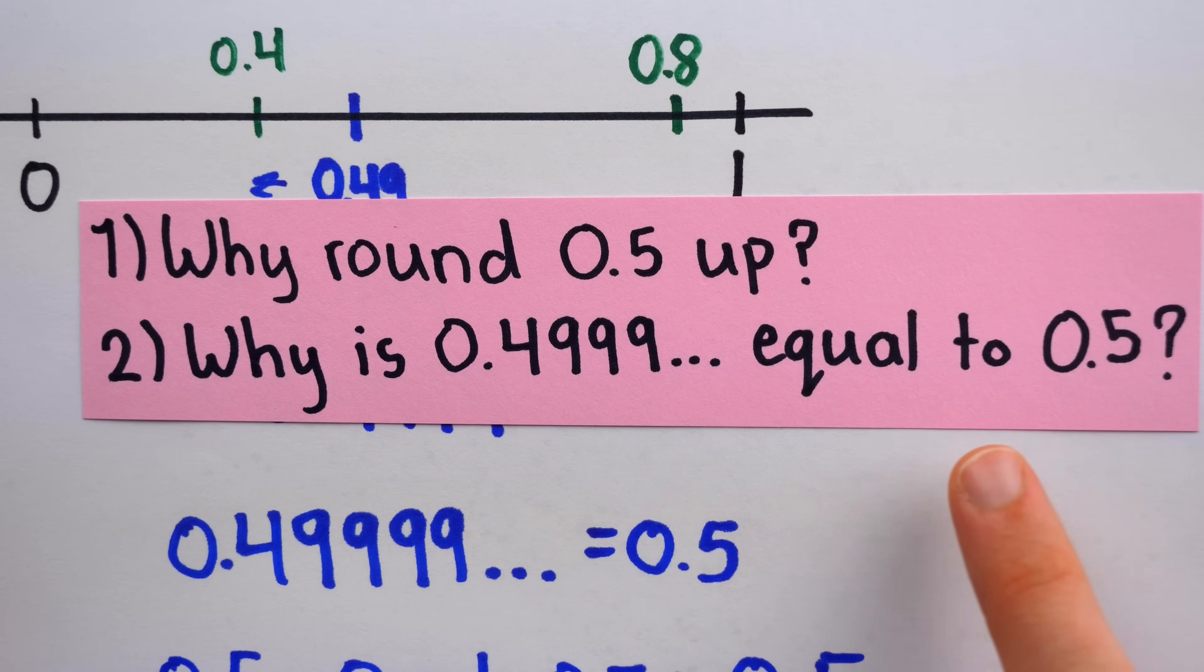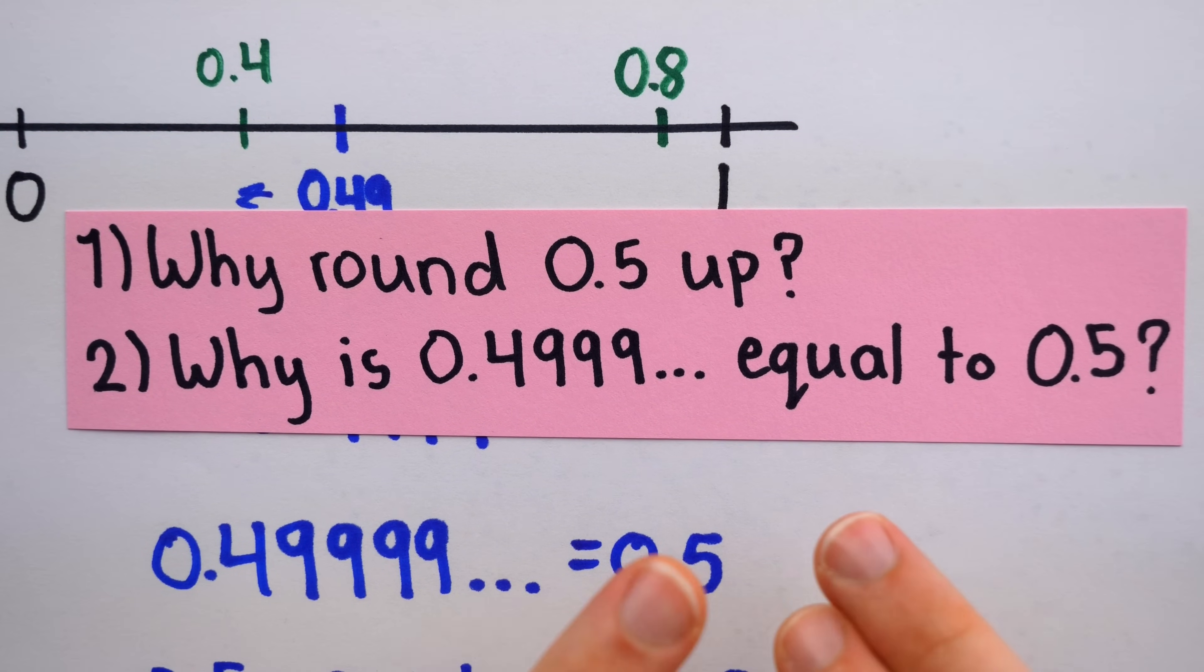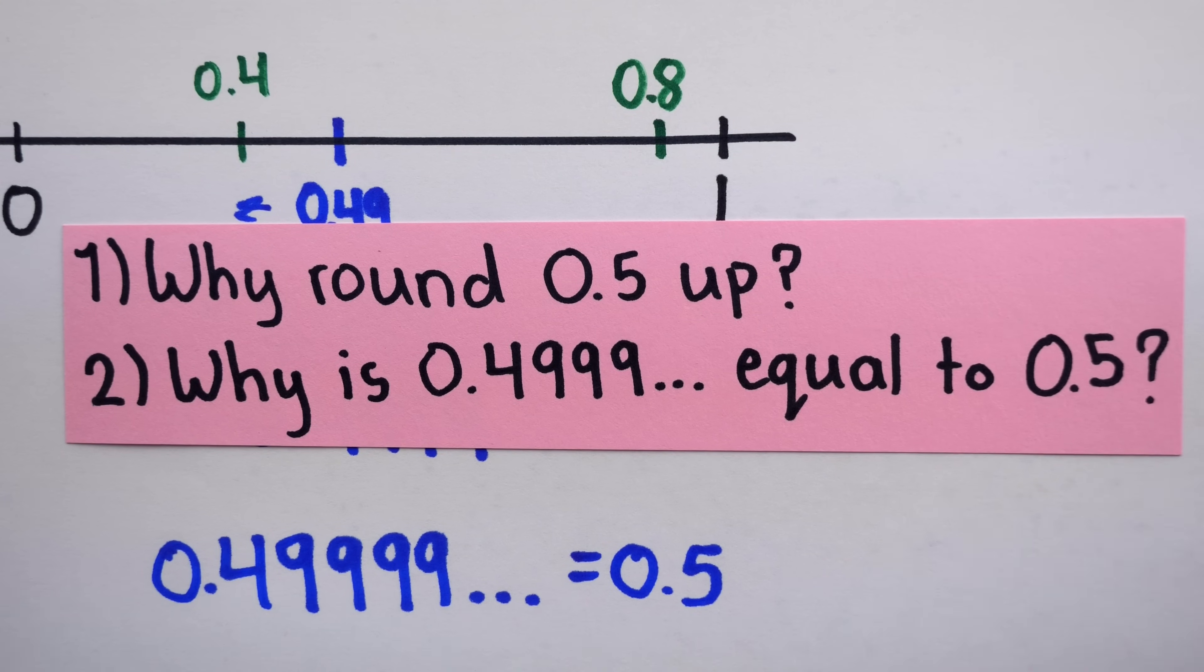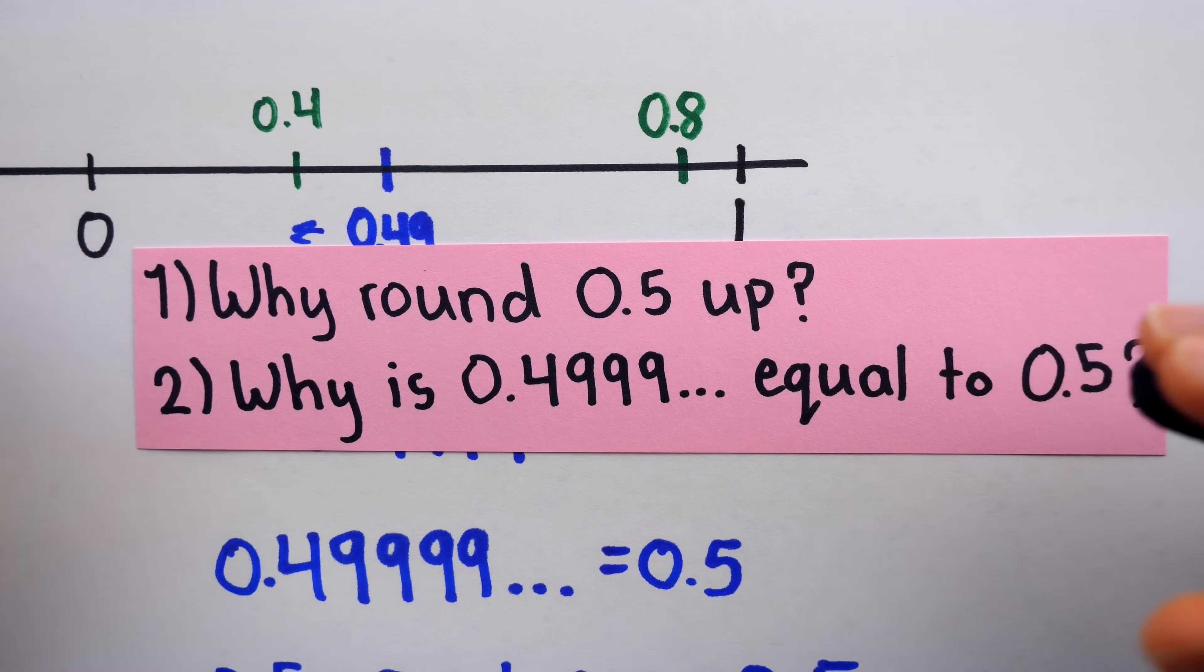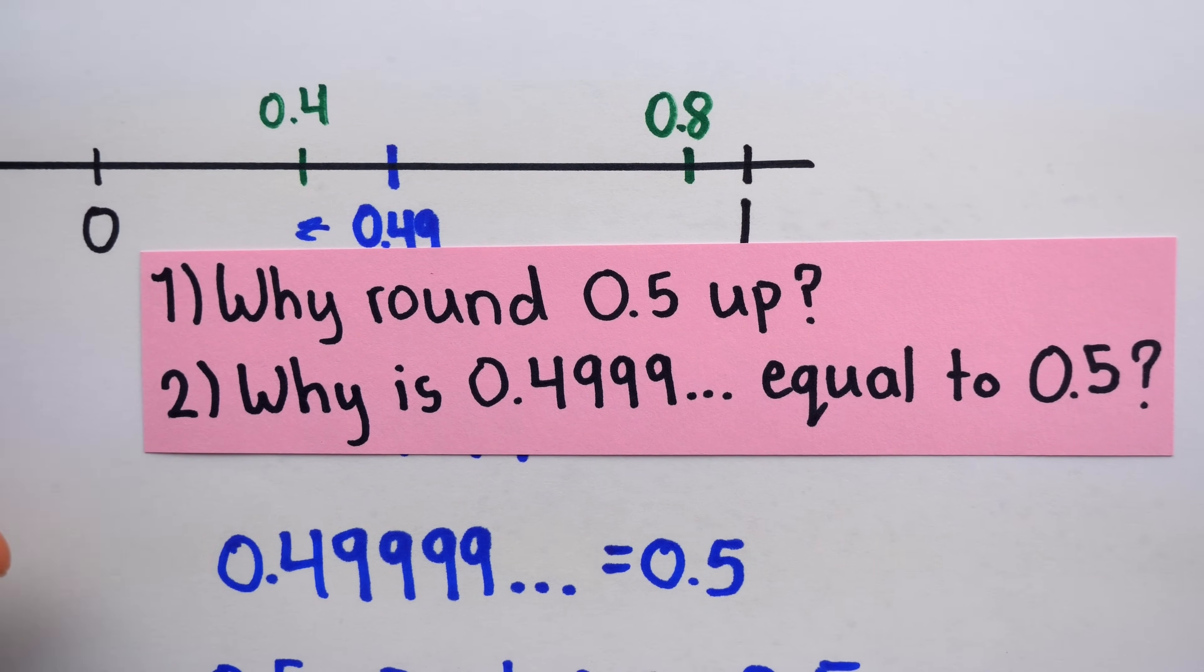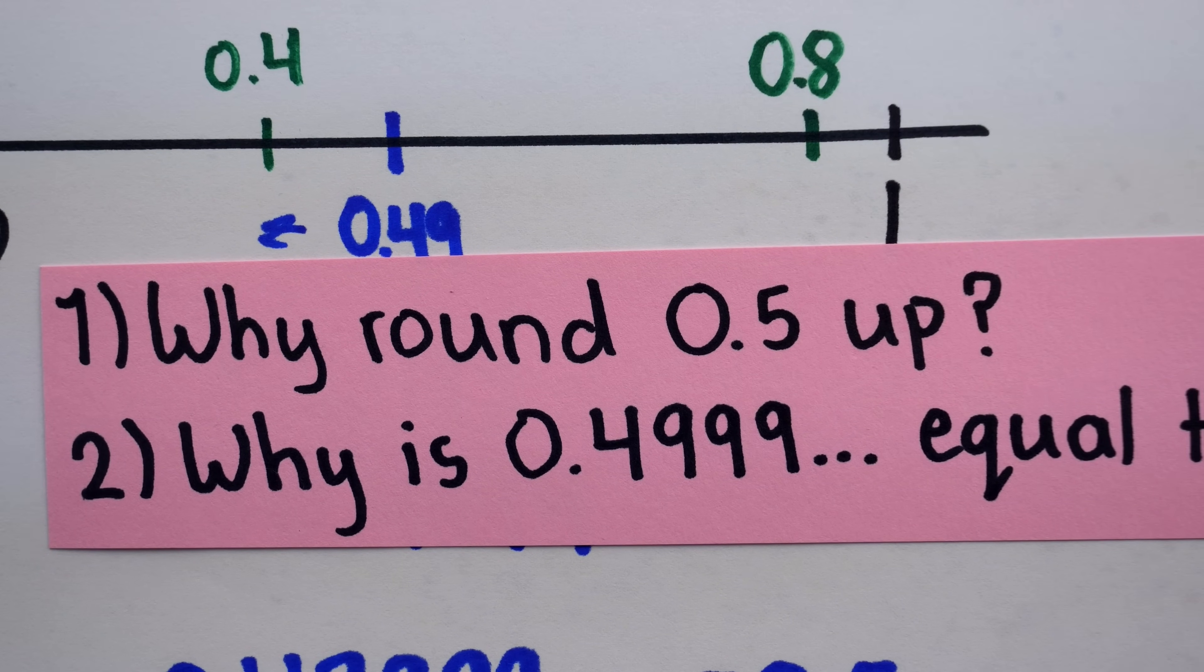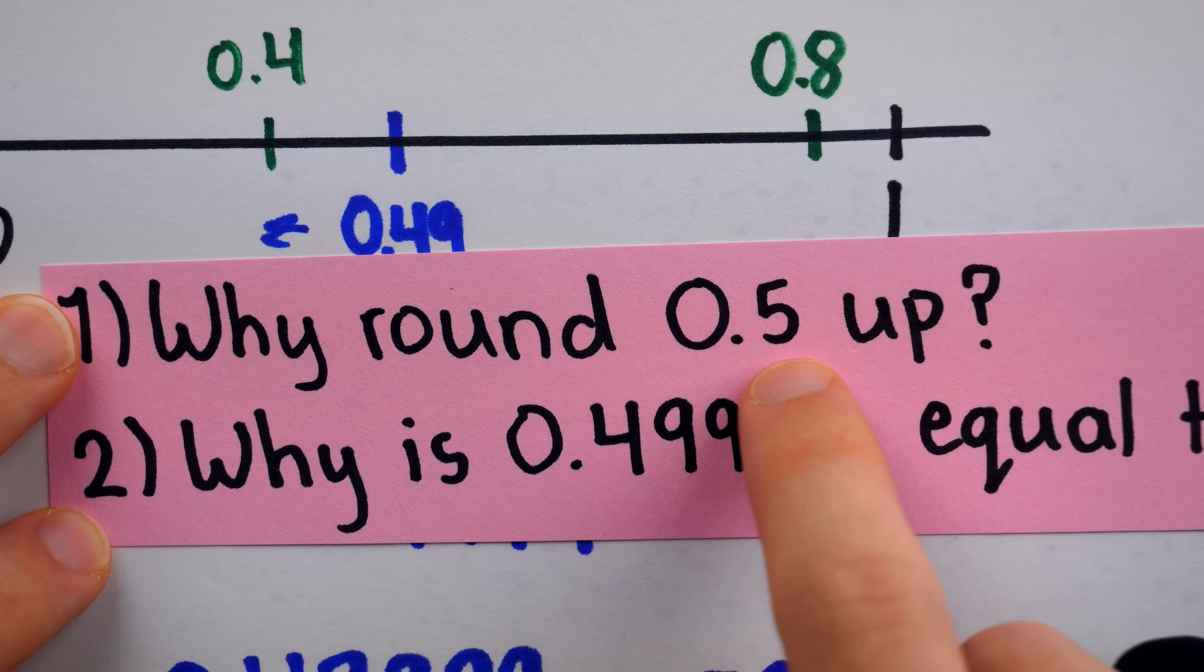I've discussed things like question 2 in rigorous detail previously, links in the description. So today we'll keep it fairly casual. But if you don't know why this is the case, then rest assured you will get an explanation. But let's begin with question 1. Why is the convention to round 0.5 up? There are several good reasons we might want to round 0.5 up.